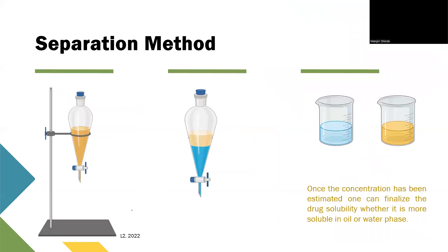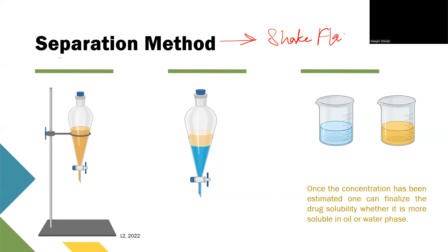Now let's look at one of the methods for separation, also known as the separation method. Partition coefficient determination is also known as a separation method, and one of its types is the shake flask method. Let's understand what the shake flask method is, the procedure, and how we determine partition coefficient from it.